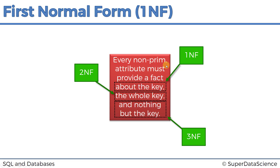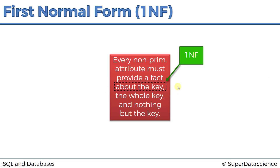Let's try it out on the first normal form since we've just covered it. The concept here is that every non-prime attribute must provide a fact about the key. For the second and third normal forms, the full phrase is important. But for the first normal form, it's a bit less strict — the most important part is just the words 'about the key.'